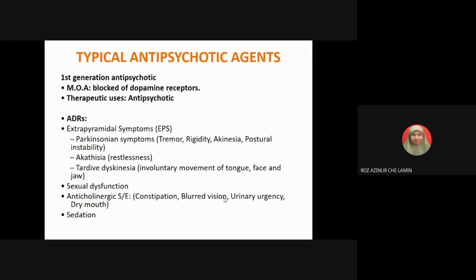The adverse effects of first-generation antipsychotics include extrapyramidal symptoms (EPS), which may include parkinsonian symptoms such as tremor, rigidity, akinesia, and postural instability. They can also cause akathisia, which is restlessness, and tardive dyskinesia, which is involuntary movement of the tongue, face, and jaw. Additionally, they can cause sexual dysfunction.